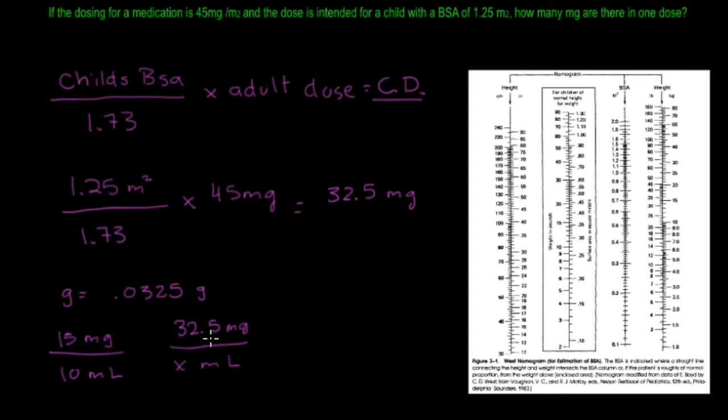that will give you 10 times 32.5 divided by 15, and that's going to give you 21.6 or 21.7 mLs. So that's how many mLs they would need if there's going to be 15 milligrams in a 10 mL dose.